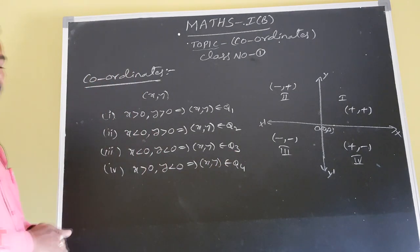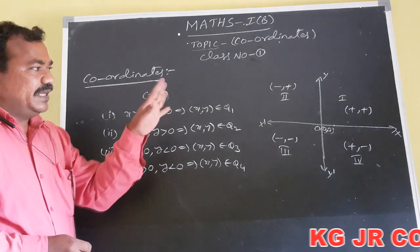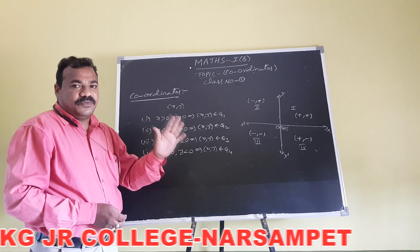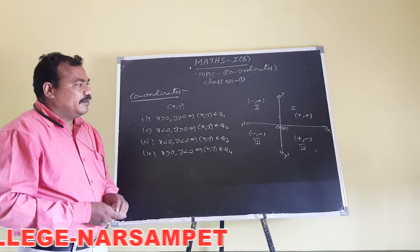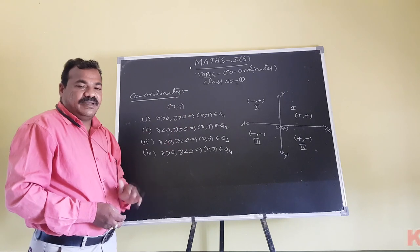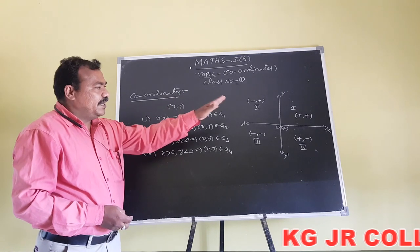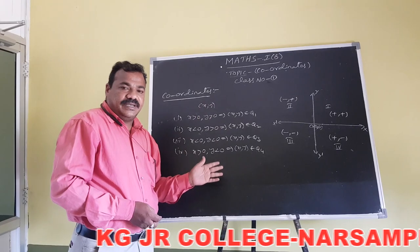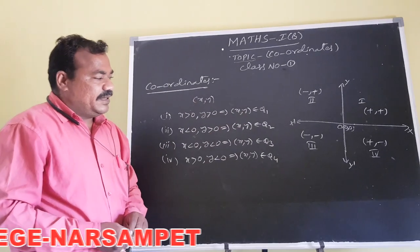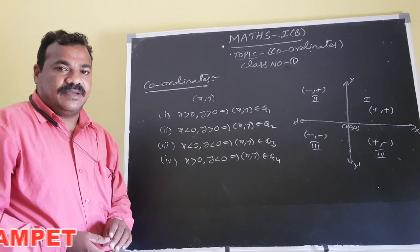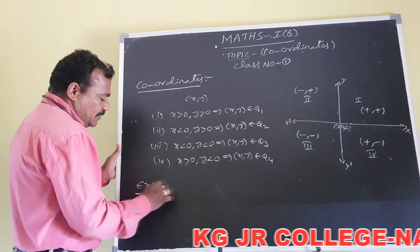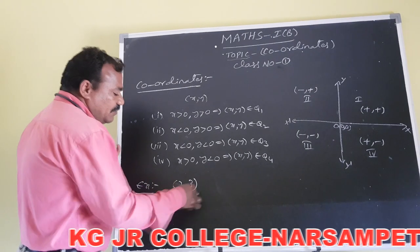Students, we can determine in which quadrant a point lies by observing the signs of its coordinates. A point can be located in the first, second, third, or fourth quadrant. We observe the sign of each coordinate to determine its location.